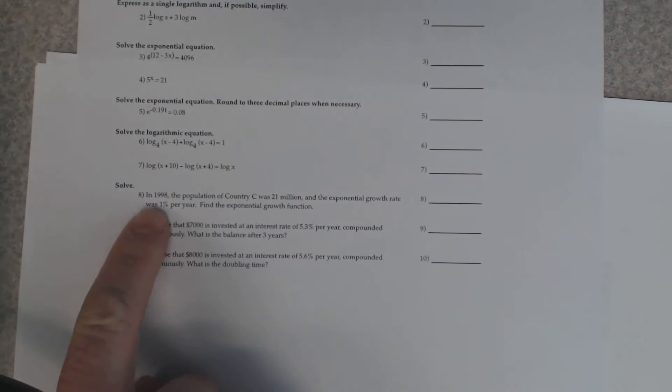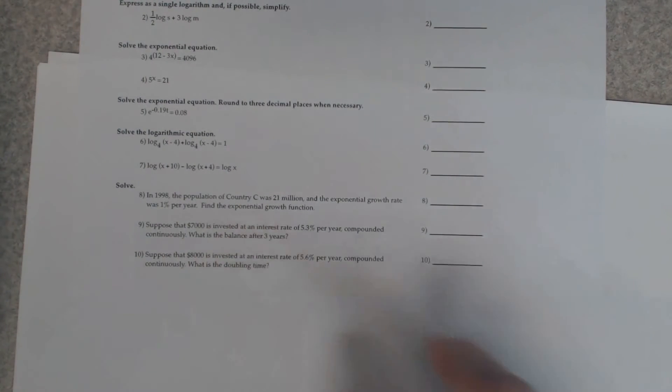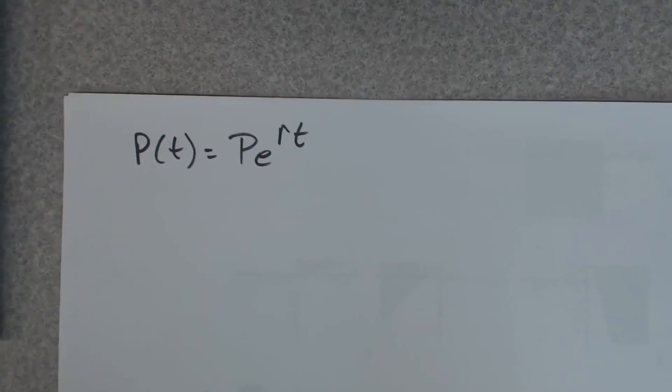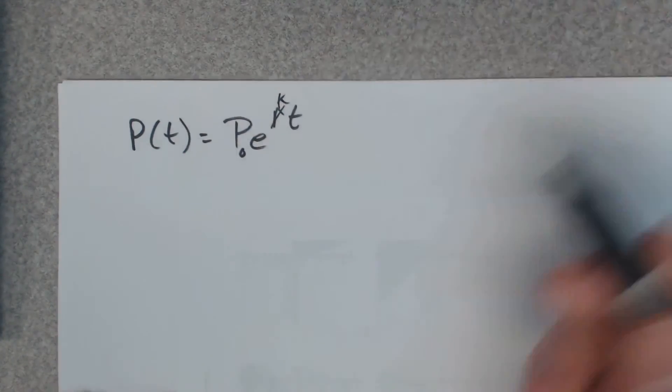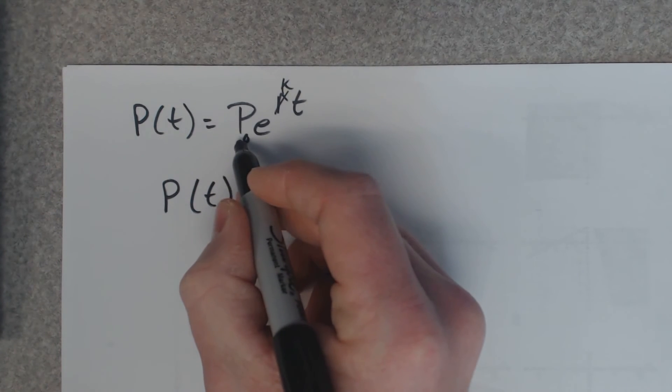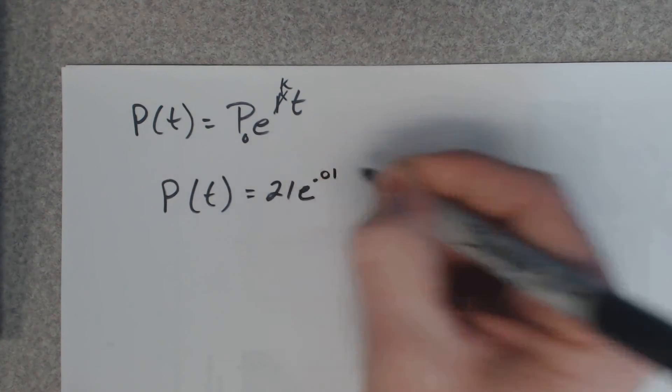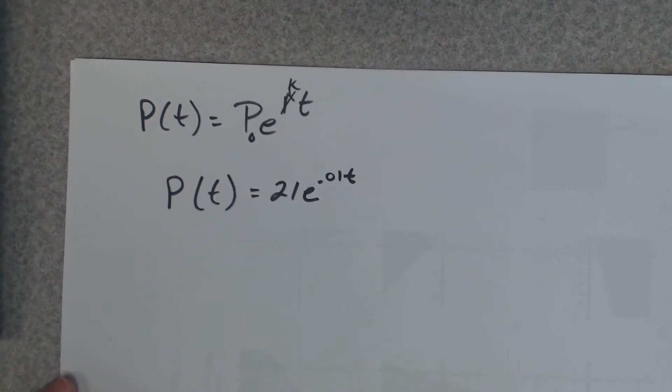We got some word problems now. I'll do this one right here. Number eight. In 1998, the population of country C was twenty one million. And the exponential growth rate was one percent per year. Find the exponential growth function. Your exponential growth function is P of t equals P naught E to the r T. That's the idea behind it. And p naught, sometimes the r, there's a k. Sometimes they put a k there. Whatever that is, it's a rate. It goes right there. So, exponential, because of population growth. So our function would be the original, which is twenty one million. E. And the rate was one percent, which is point oh one. So you convert that to a decimal. And then t is going to be time. That's your exponential growth function.